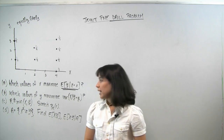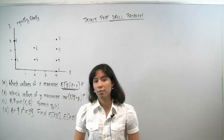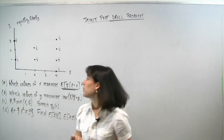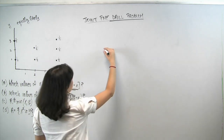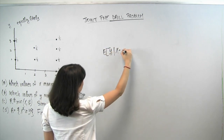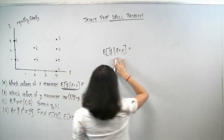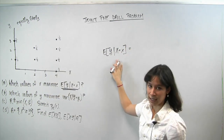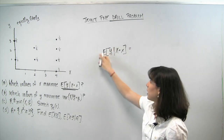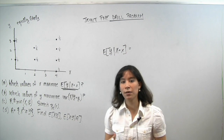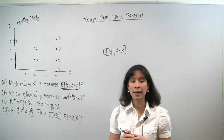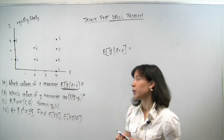In part A, we are asked to find the values of x that maximize the conditional expectation of y given x. This quantity is a function of x — you plug in various values of x, and it spits out a scalar value corresponding to the conditional expectation of y, conditioned on the value of x that you put in.